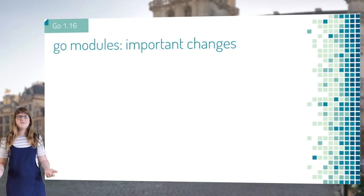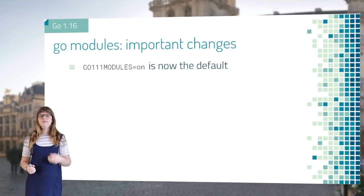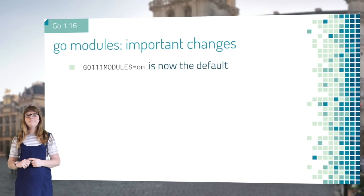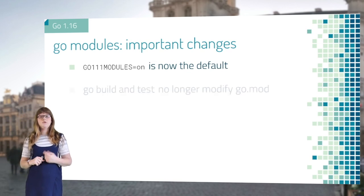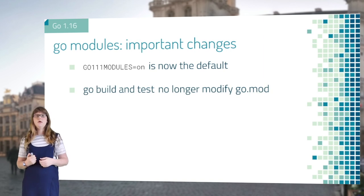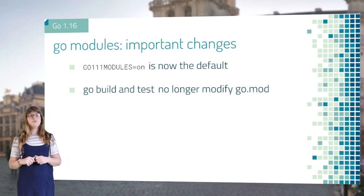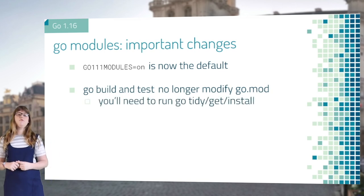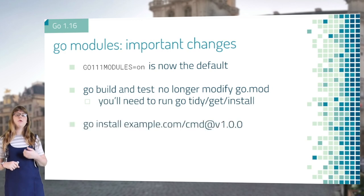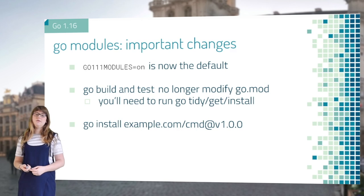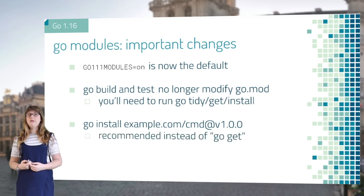The first change is that Go modules is now enabled by default — the equivalent of setting the GO111MODULE environment variable to on. The next big change is that Go build and Go test no longer modify the Go modules file. If you now want to modify it, you will need to run Go mod tidy, Go get, or Go install. Go install also got new improvements — for example, it can now install a specific version of a module, making it the recommended method of installing modules instead of Go get.